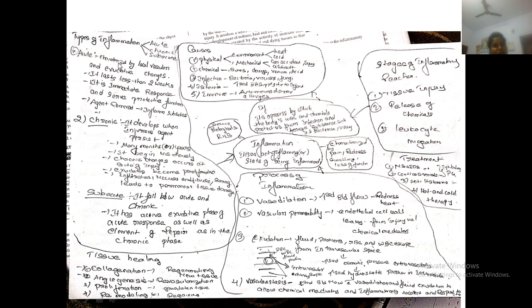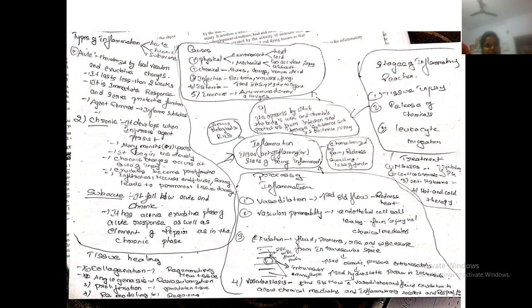Types of inflammation: acute, chronic, and subacute. Acute inflammation is characterized by local vascular and exudate changes. It lasts less than two weeks. It is an immediate response that serves a protective function. When the causative agent is removed, the inflammation will subside.